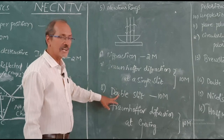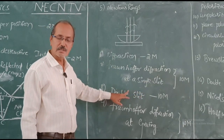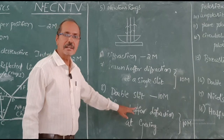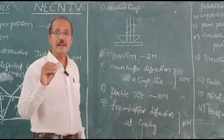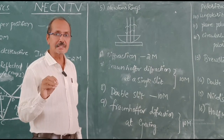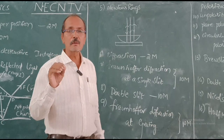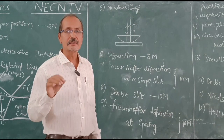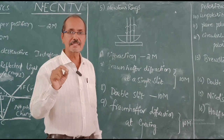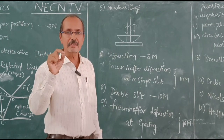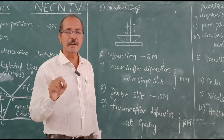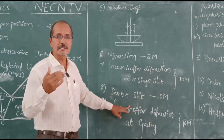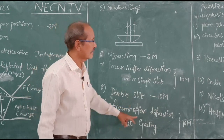The next question is Fraunhofer diffraction at a double slit, which is also important for 10 marks. Next is Fraunhofer diffraction at a grating. A grating consists of multiple slits — a number of parallel slits having equal width E and separated by equal opaque spaces. It is constructed by ruling a large number of parallel lines on a thin transparent material like glass using a fine diamond point. We derive the expression for resultant intensity of diffracted waves, and this is also important for 10 marks.